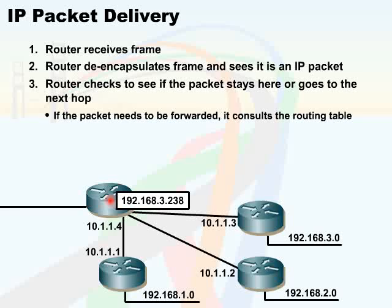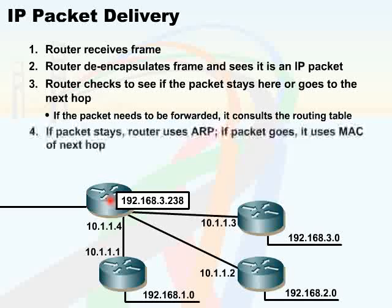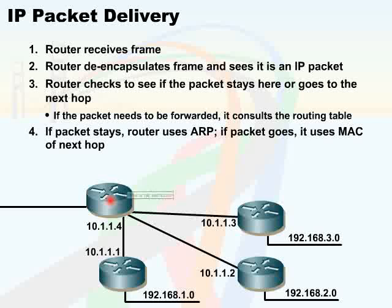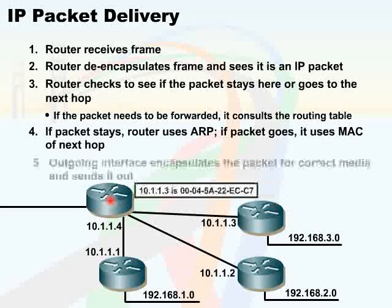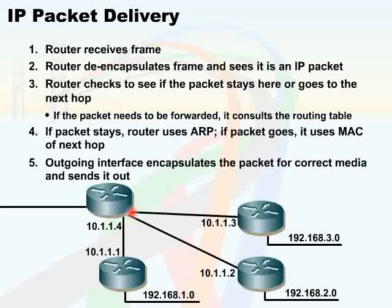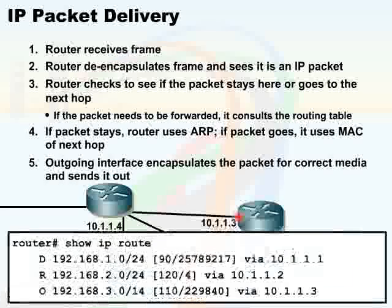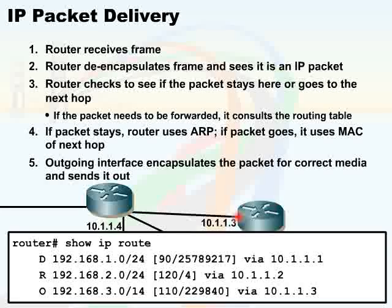The output interface buffer is very important because the router has to determine whether or not it has the MAC address of the destination. If the router has identified that the packet is going to stay with it, the router will use ARP directly. If the packet needs to be forwarded, the router is going to use the MAC address of the next hop router and will forward it. Outgoing interfaces will encapsulate the packet for the correct media and then forward it based upon what's identified in the routing table.